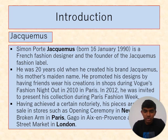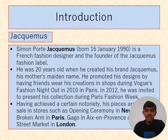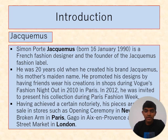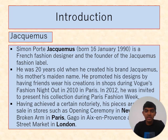Introduction for Jacquemus: Sylvain Porte Jacquemus, born January 16, 1990, is a French fashion designer and the founder of the Jacquemus fashion label. He was 20 years old when he created his brand. He promoted his designs by having friends wear his creations in shops during a fashion night out in 2010 in Paris. In 2012, he was invited to present his collection during Paris Fashion Week. His pieces are now on sale in stores such as Opening Ceremony in New York, Broken Arm in Paris, and Dover Street Market in London.